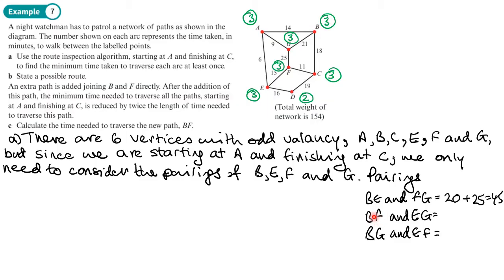Then we're going to look at the second pairing: B,F and E,G. Going from B to F - this weight is 46 going one way. The other route is 11 plus 18, which is 29 - not 39, I need my simple maths! So 29 looks like the shortest route from B to F. And then E to G - that's only going to be 15 there, any other direction is going to be more than 15. So this pairing has a total weight of 44.